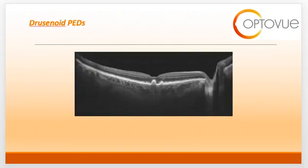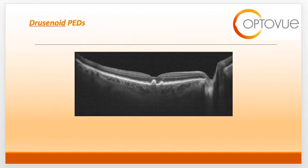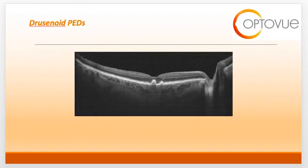The second type of PED is a drusenoid PED. Drusen reside at the Bruch's-RPE complex, so a drusenoid PED results from drusen pushing anteriorly on the RPE. Drusenoid PEDs appear as well-circumscribed elevations of the RPE that are usually turbid or hazy white in color. They may have irregular or well-defined borders. Note the hazy color underneath the RPE, which distinguishes this from a serous PED. Use the location, size, and internal reflectivity to help classify the PED.